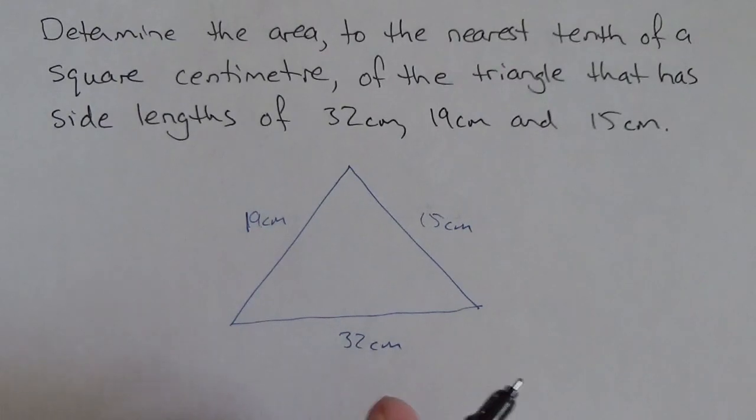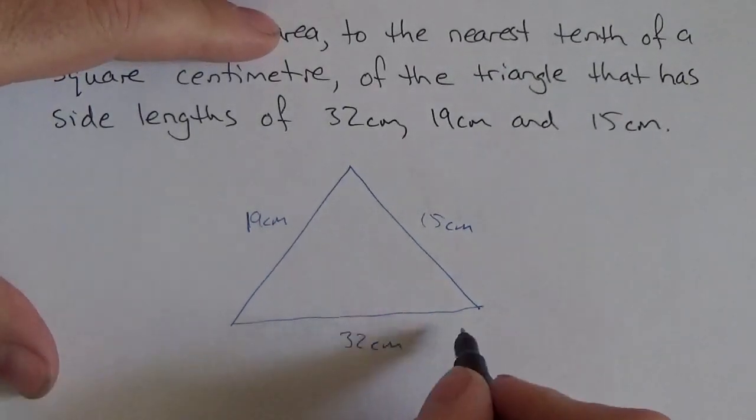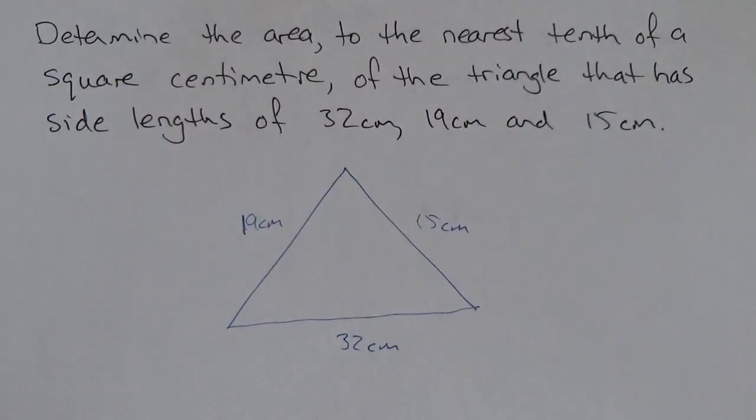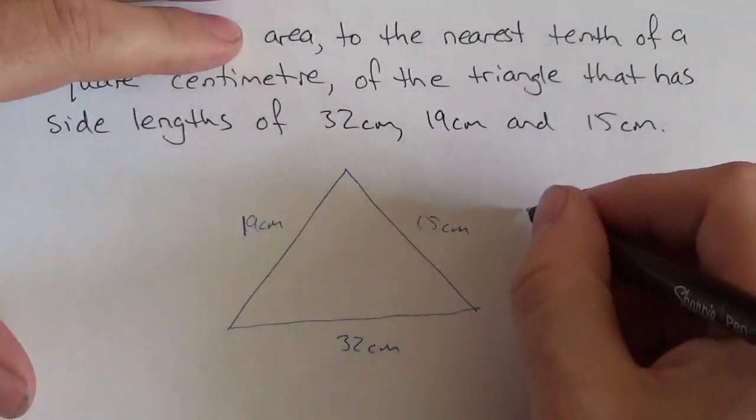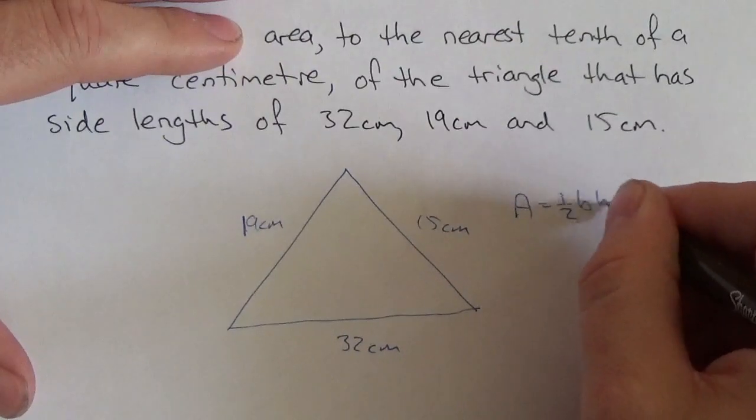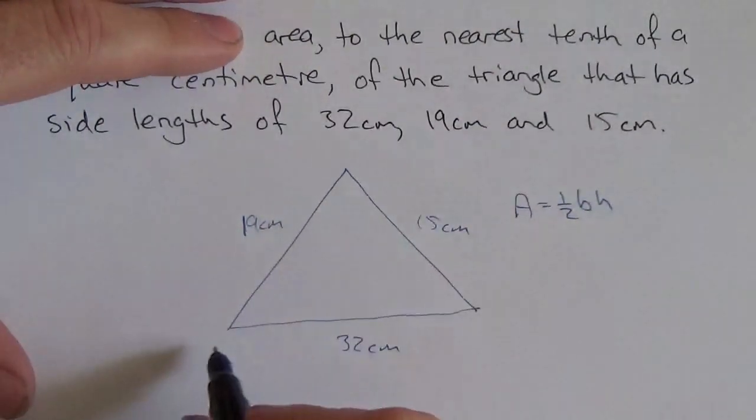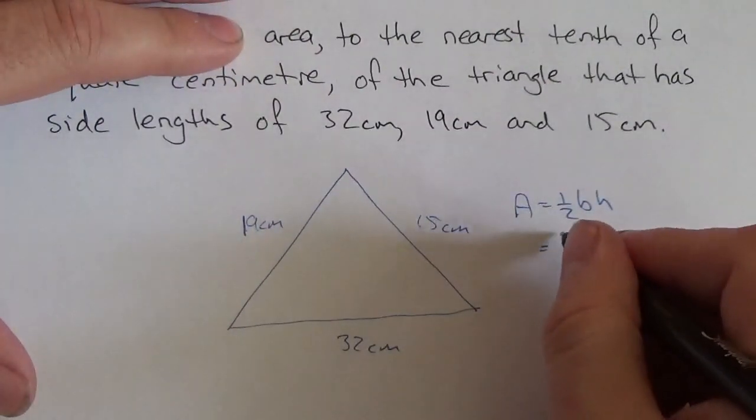Now, I want to take a look at that and think, okay, I need to know the area. Well, I need the base. Area is going to be one-half base times height. So let's put that over here. The way I've drawn it here, I've got the base. I've got the base of 32.